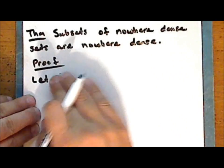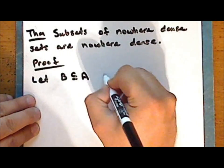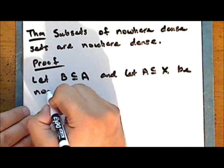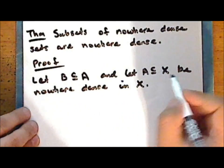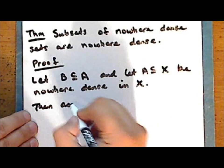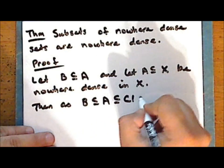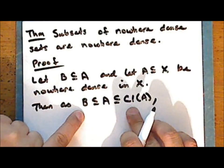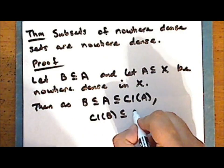Let B be a subset of A, and let A, which is a subset of the space X, be nowhere dense in the space X. Then as the set B is a subset of the set A, which is itself a subset of the closure of the set A, we have that the closure of A is a closed set containing the set B. And since the smallest closed set which contains B is the closure of B, we have that the closure of B is a subset of the closure of A.